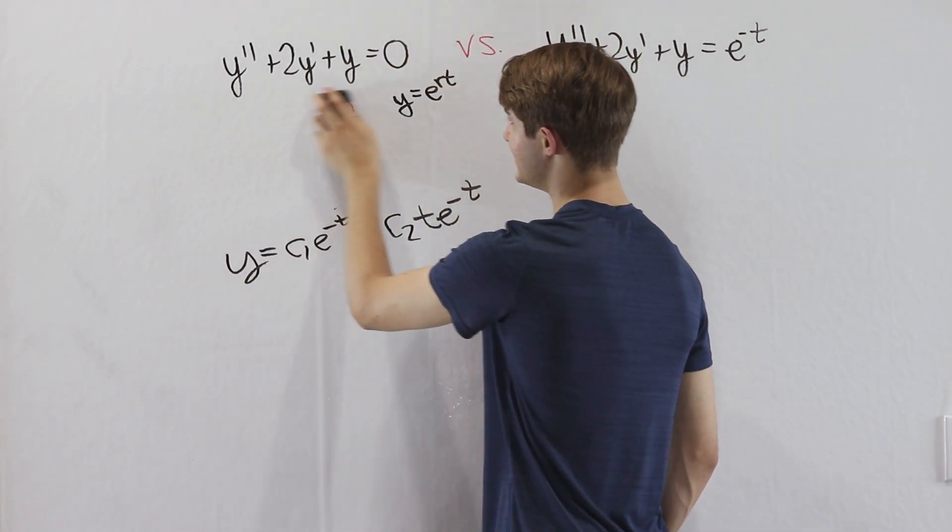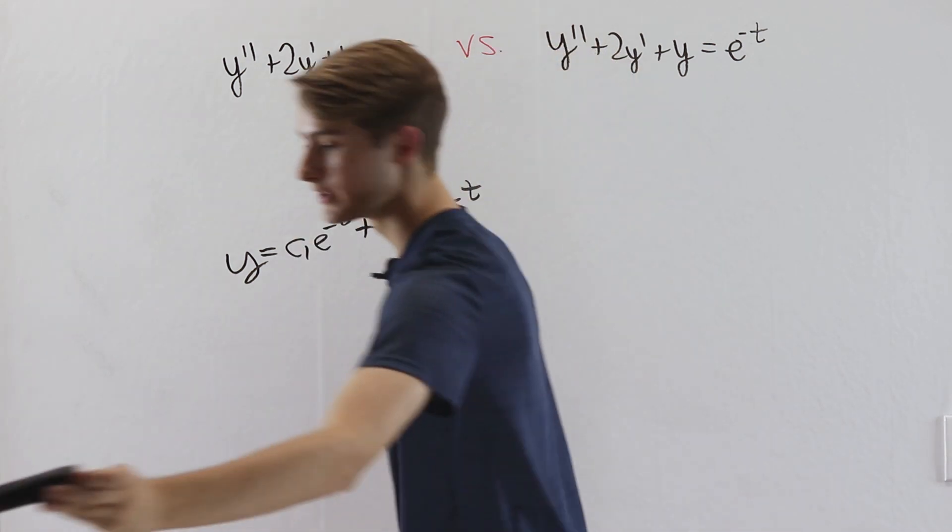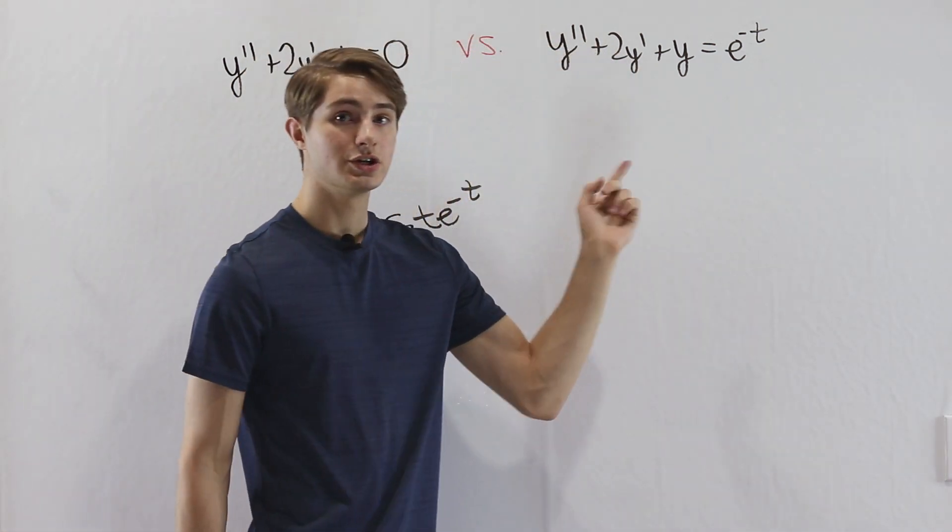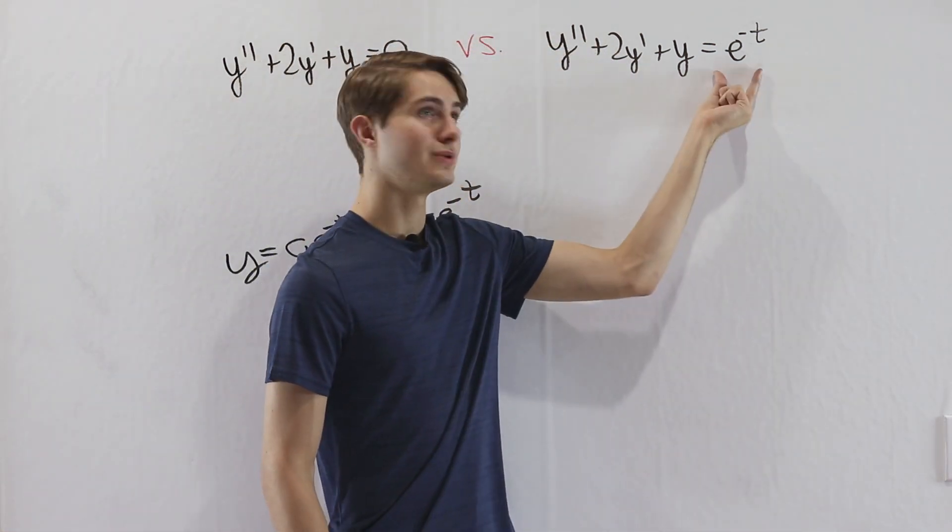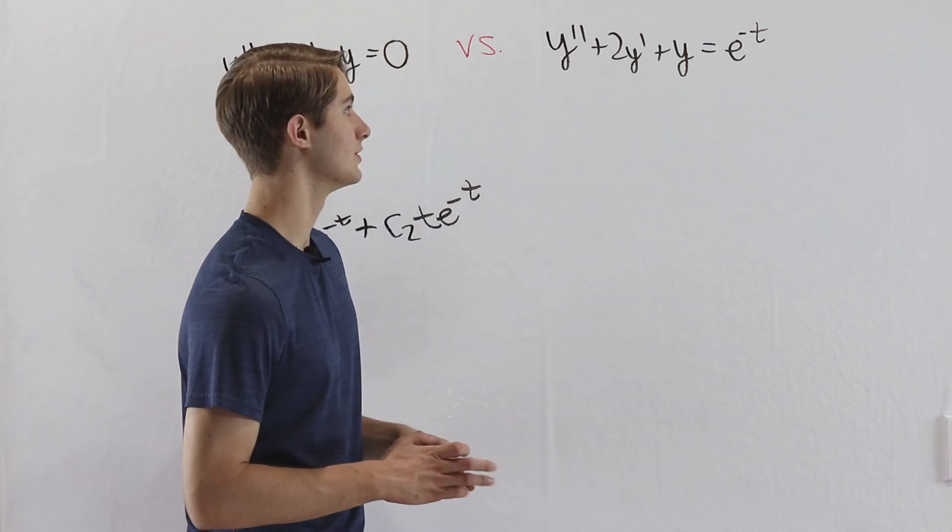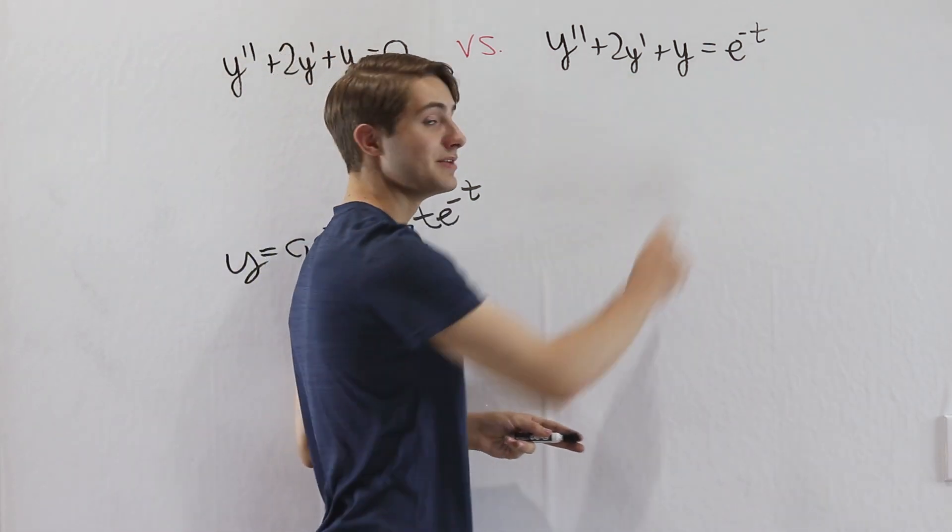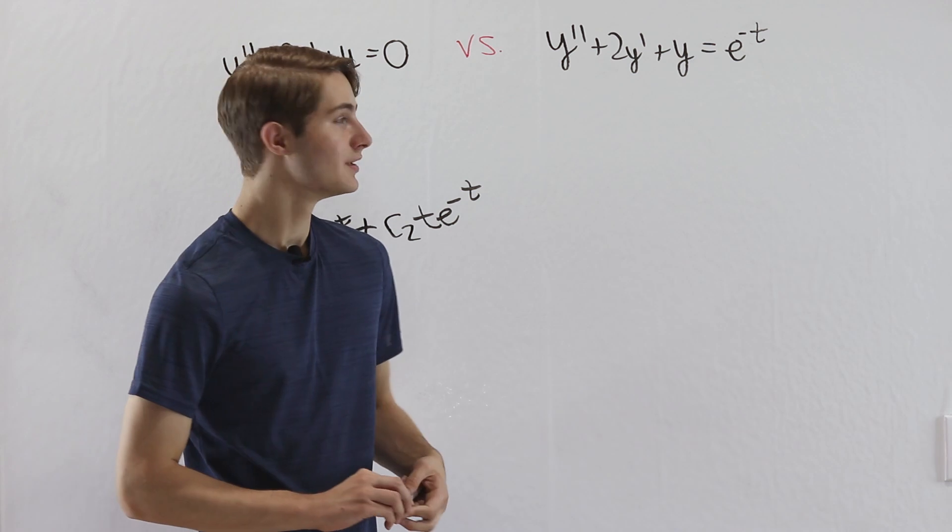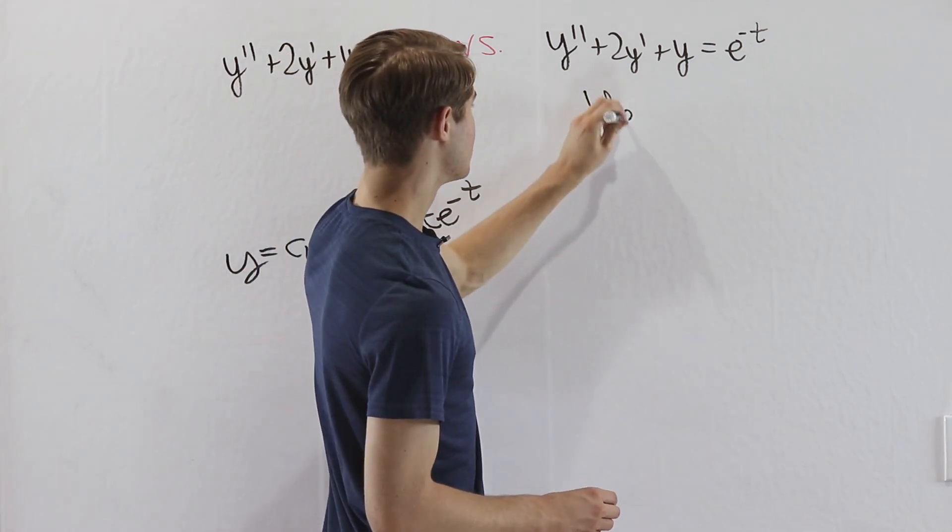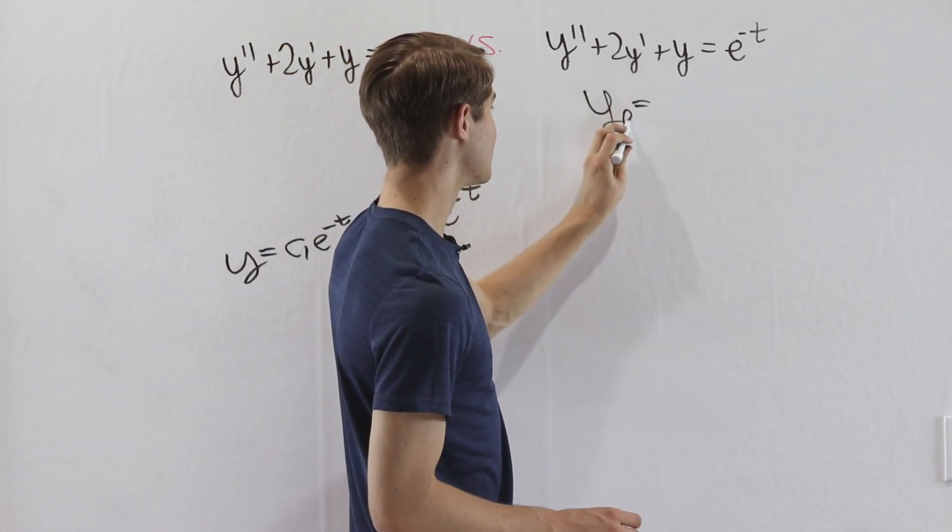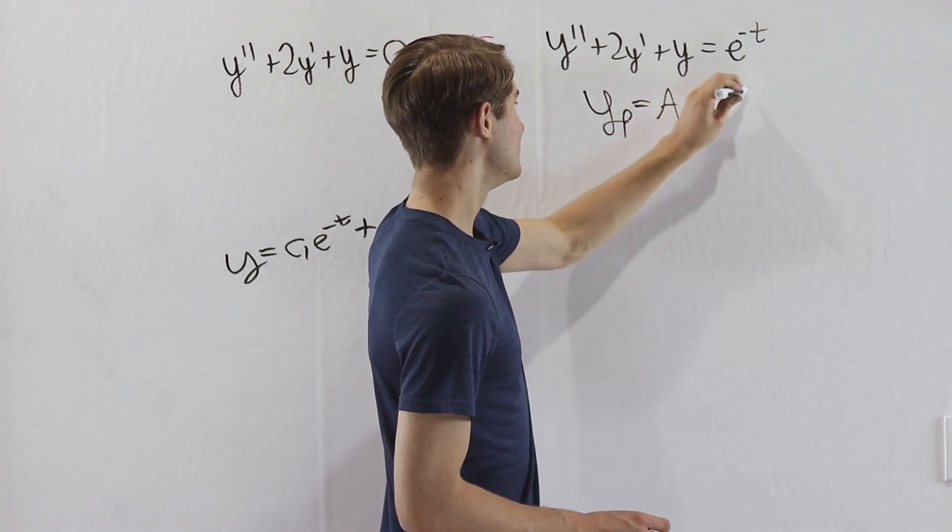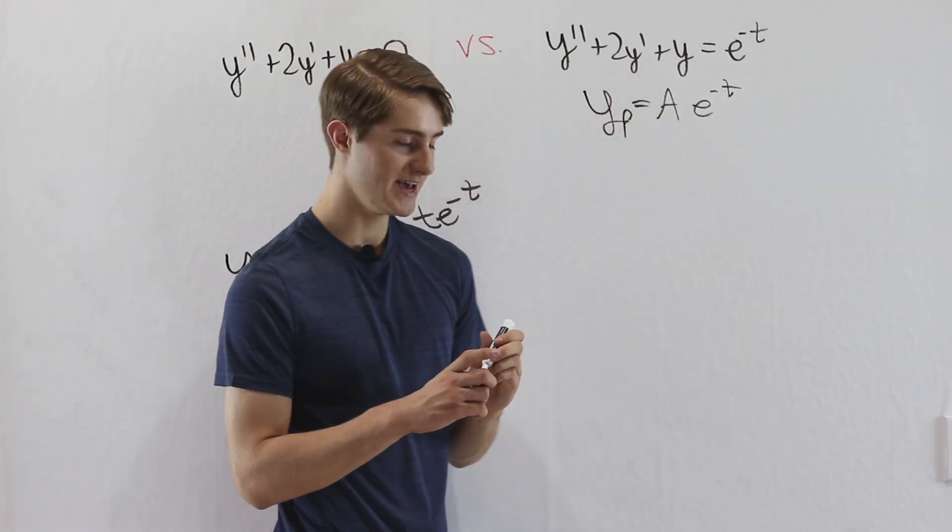We're going to get started on the second equation on the right. So this is an undetermined coefficient situation because the right side is not equal to 0. But if we take a look at this, when we have e to the negative t, normally our particular solution guess would be that the particular is a times e to the negative t for some constant a.